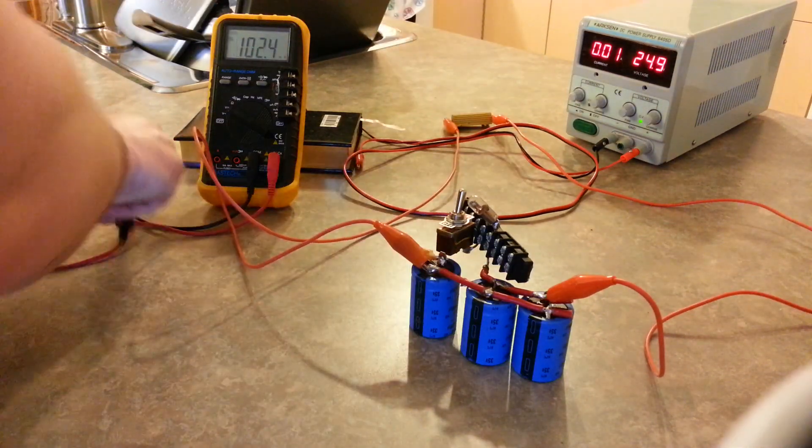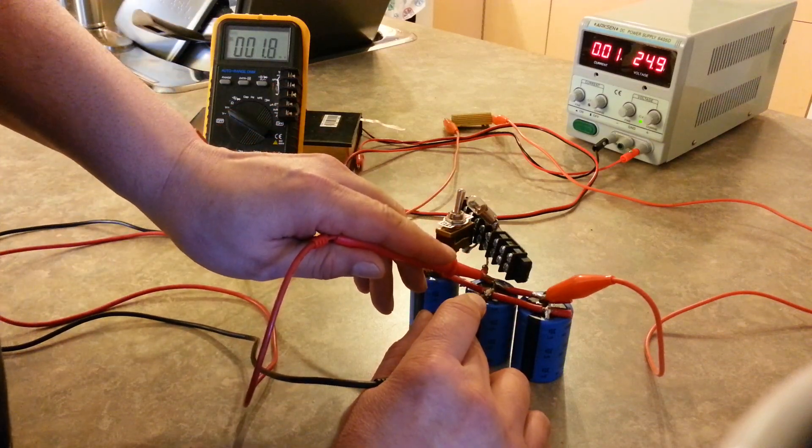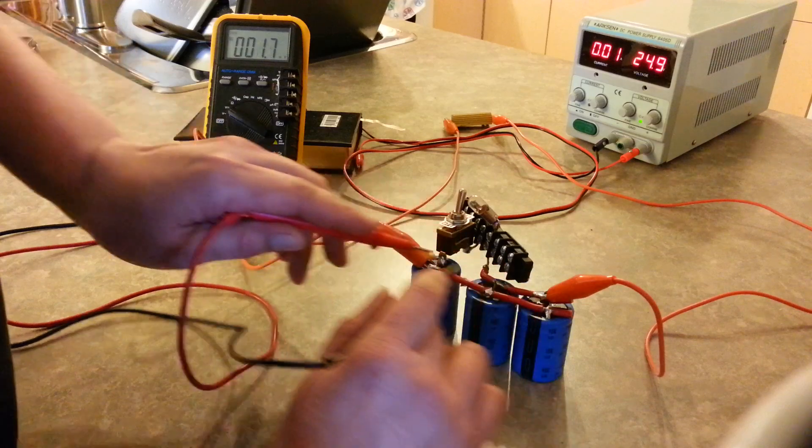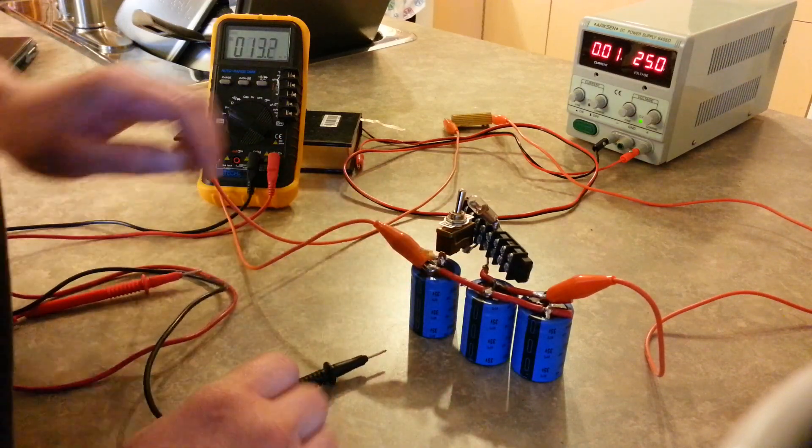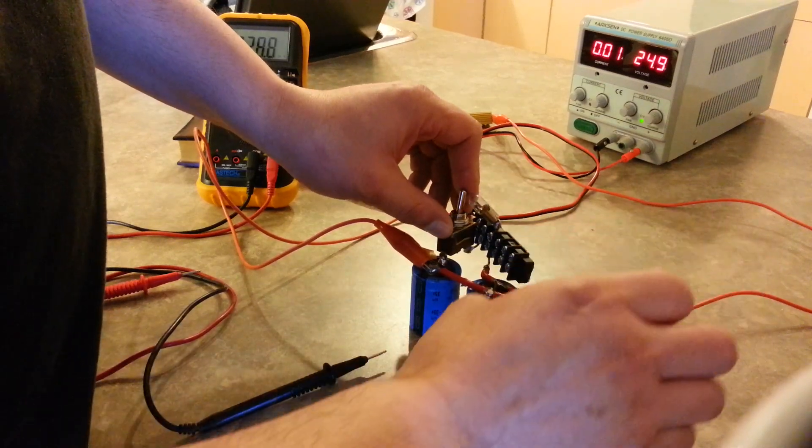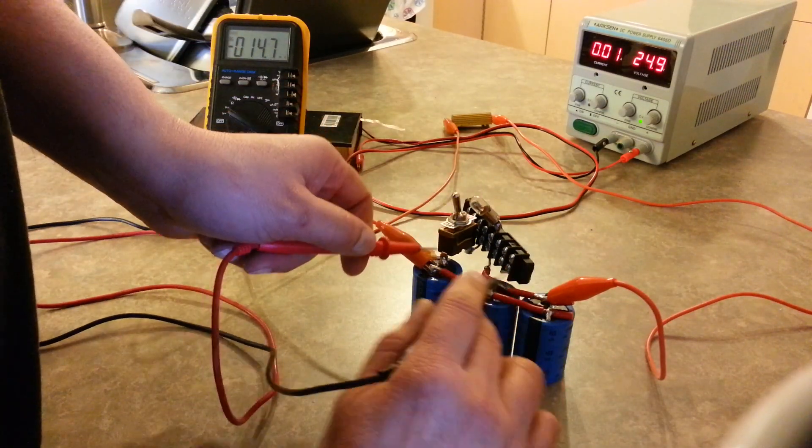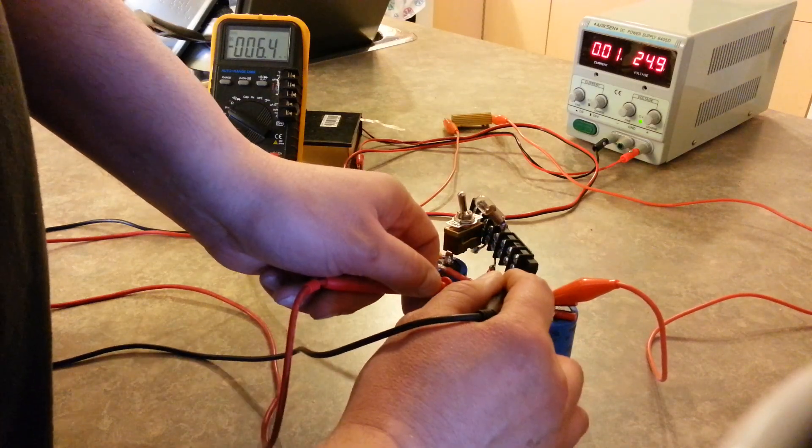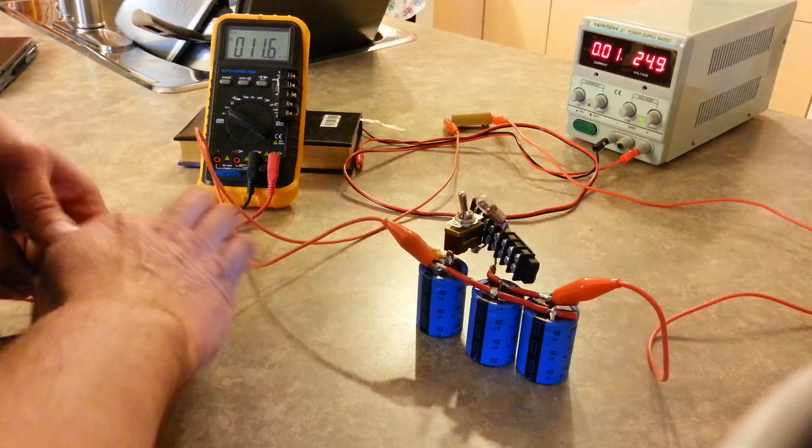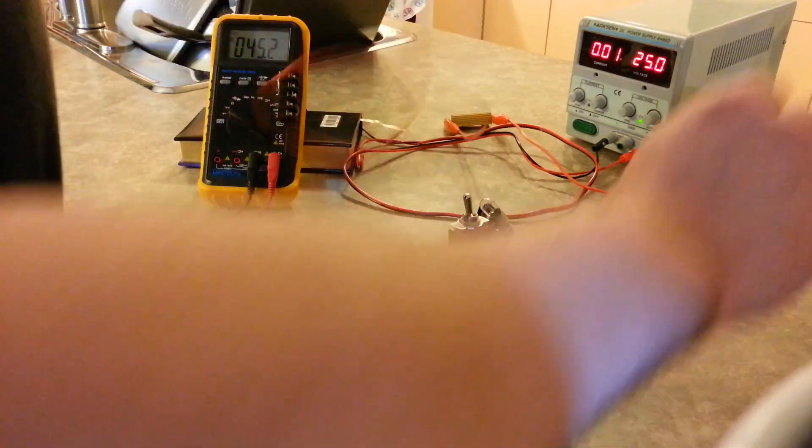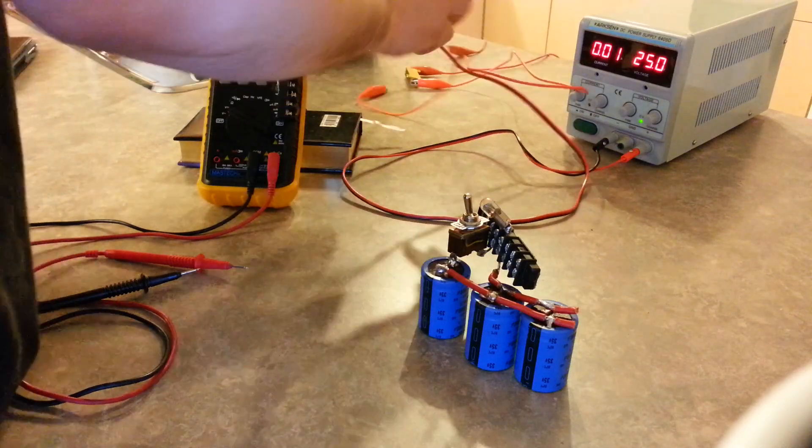Okay, so what we'll do is we'll open the switch, measure again, all right. Okay, now we'll remove the resistor and what we'll do is we'll proceed to charge.